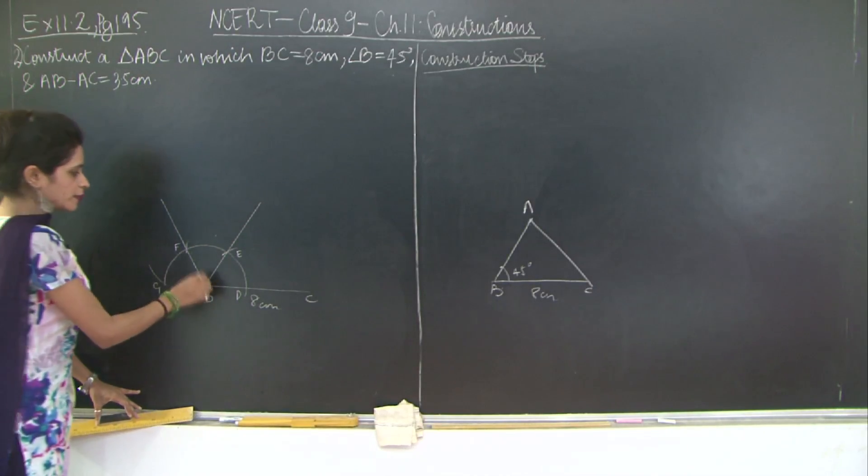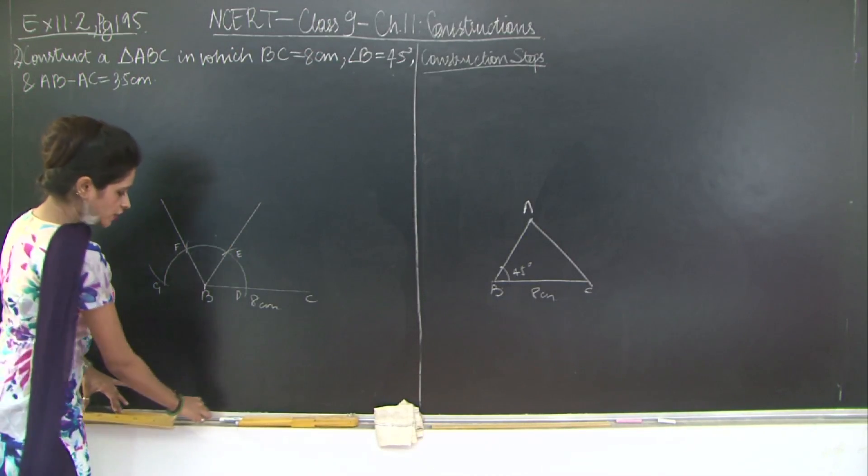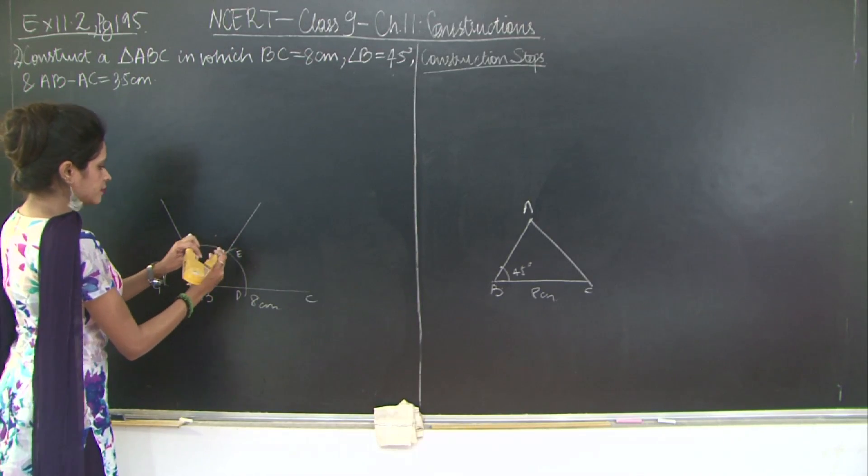So B to E and F. Now I'm going to bisect FBE so I will get 90 degrees, right? So bisecting FBE.